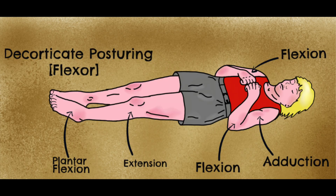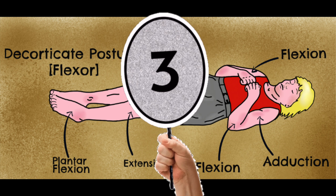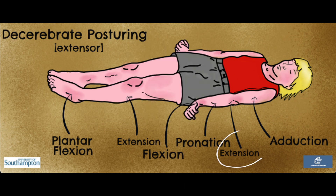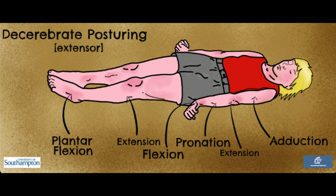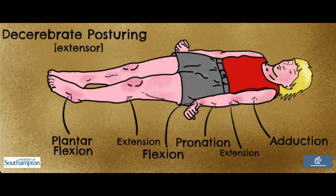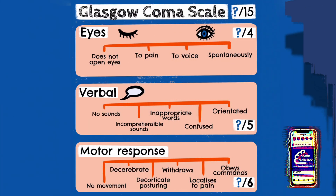Next, we have decorticate posturing to a painful stimulus, also known as abnormal flexion. This typically involves a patient being stiff with adducted arms, internal shoulder rotation, elbow and wrist flexion, and pronation of the forearm. This would score a 3. Decerebrate posturing, also known as abnormal extension, would score a 2. This typically involves an extended head, arms and legs on one or both sides of the body; the patient is often rigid with their teeth clenched. Both indicate severe brain damage, but decerebrate posturing is more indicative of damage at the rubrospinal tract, indicating a problem lower in the brain stem.